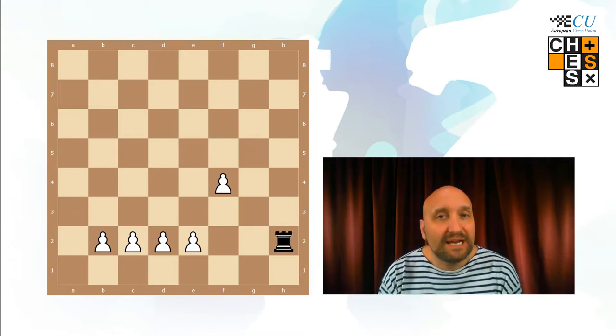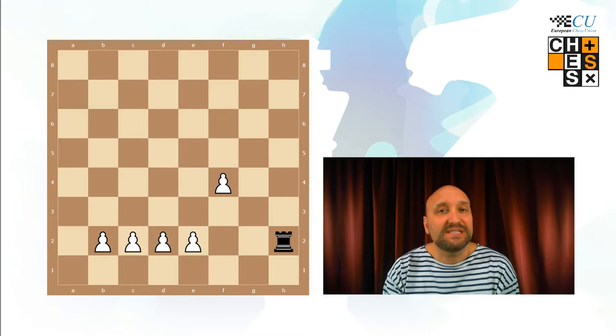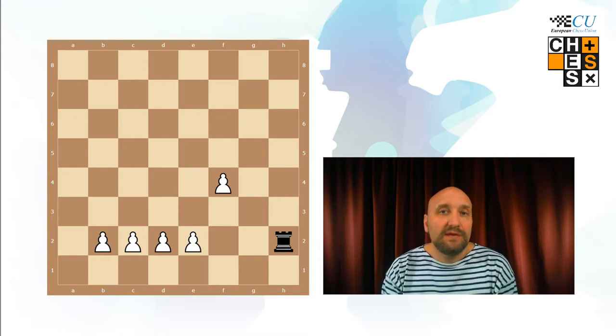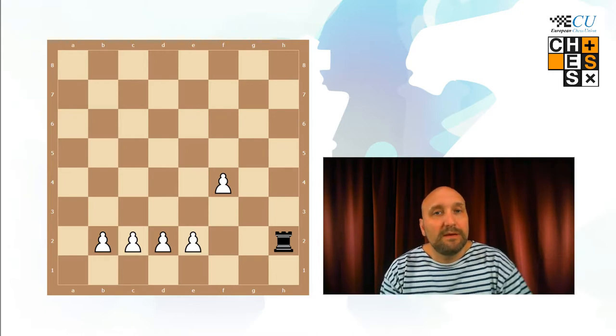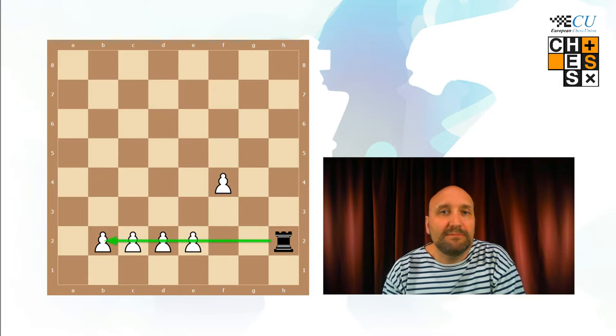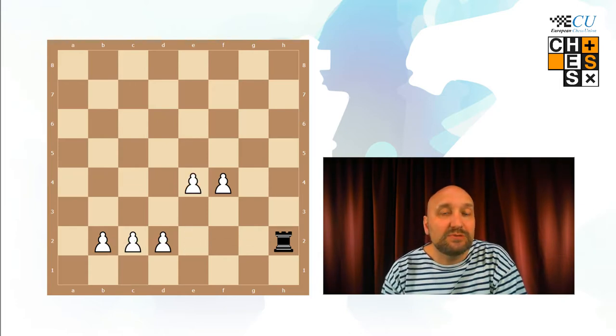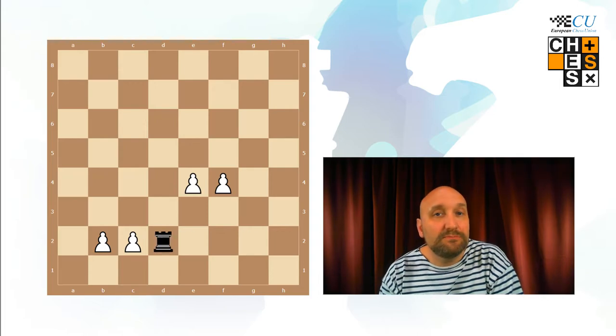White plays f4 again. The black rook is trying to attack from the side. And now, even though white can protect the e-pawn by moving it forward, the black rook will take at least one pawn immediately, the d2 pawn like this.